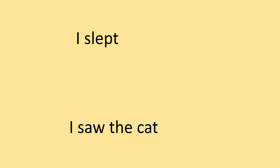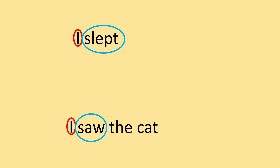Forget all the complications — just look at the screen and look at the two sentences: 'I slept' versus 'I saw the cat.' What are the differences? It's very simple. In 'I slept,' you basically have two parts. 'I saw the cat' has three parts: I, the person doing the action; saw, which is the verb; and the cat, which is the object — the thing receiving the action, the thing that's being seen.